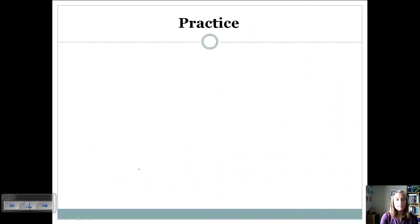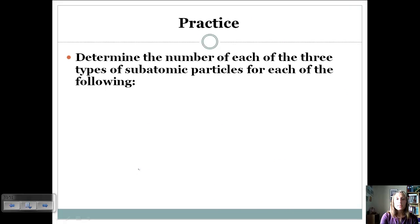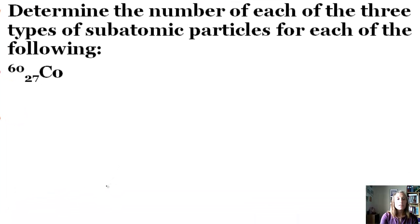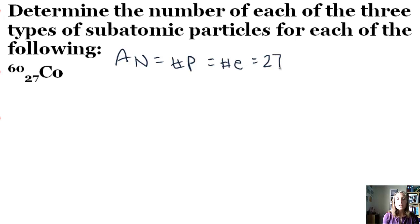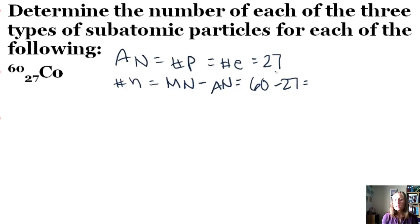Let's try a couple more practice problems. Cobalt has a mass number of 60 and an atomic number of 27. The atomic number equals both the number of protons and electrons, so those are both 27. The number of neutrons equals mass number minus atomic number: 60 minus 27 gives us 33 neutrons.